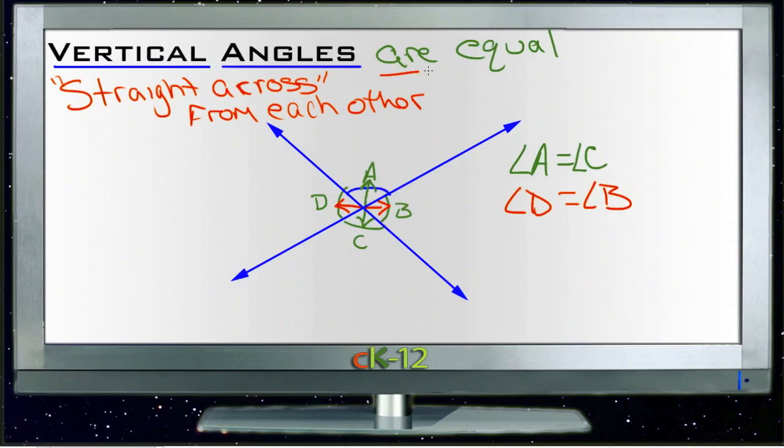And they are equal. You'll use this sort of postulate, this rule, a surprising number of times. So it's definitely well worth remembering that vertical angles are straight across from each other and they are equal.